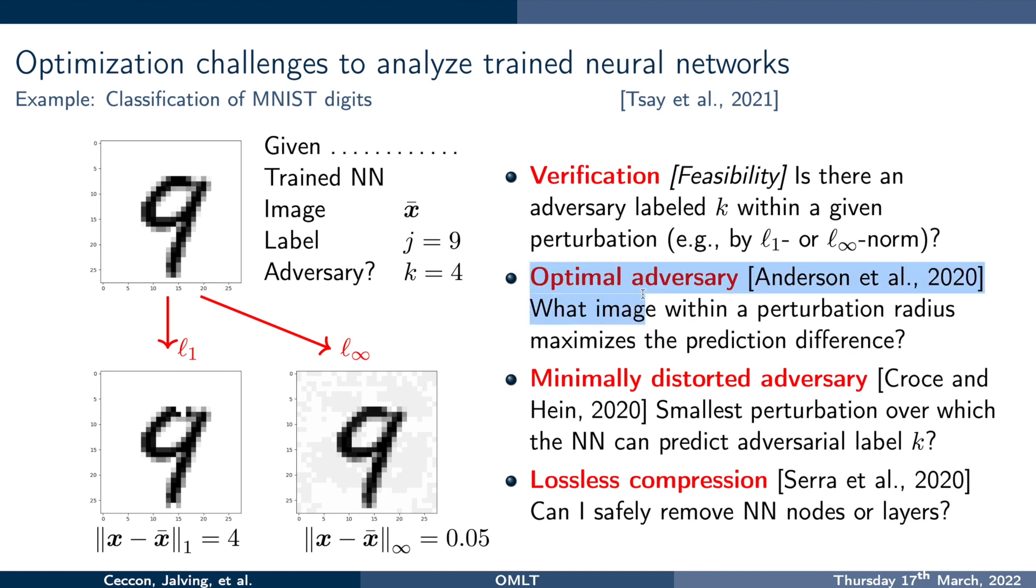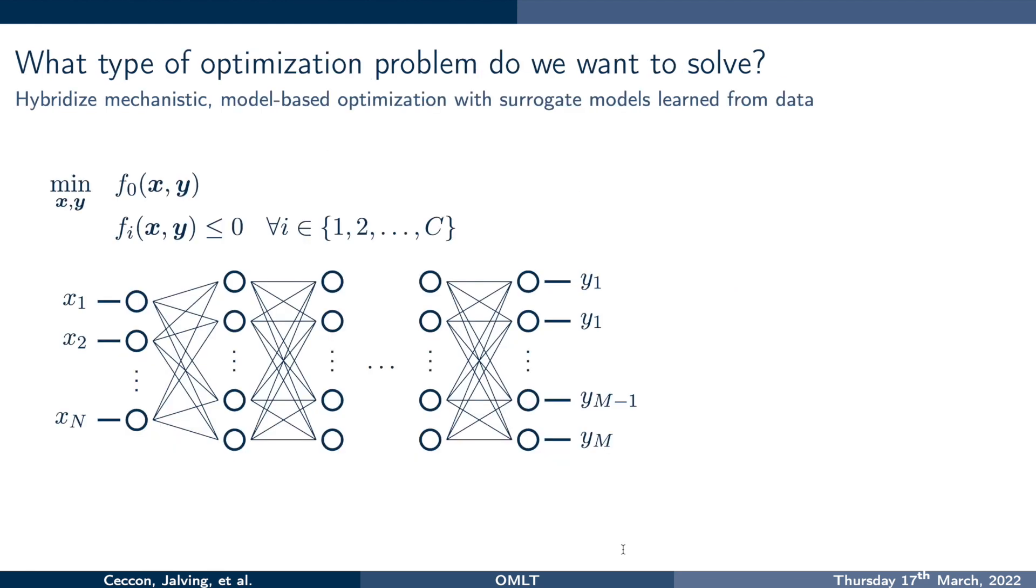An optimal adversary would be within a given perturbation radius, what maximizes the prediction difference. So where are you quite sure that this really is a 4. And then I might want to think about a minimally distorted adversary. This would be the smallest perturbation over which the neural network is going to predict that this is a 4. I might also want to ask myself, can I safely remove neural network nodes or layers? So these are all challenges that can be written down as optimization problems. Maybe I want to write them down as optimization problems. And then I also had mentioned a number of other applications in engineering and also in machine learning.